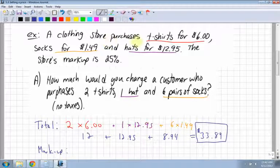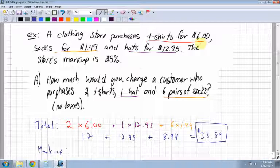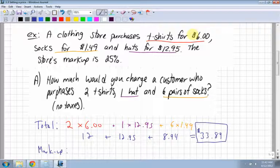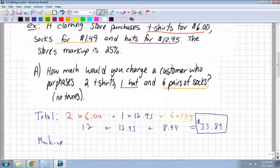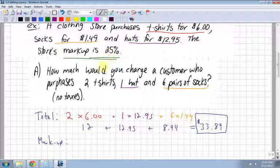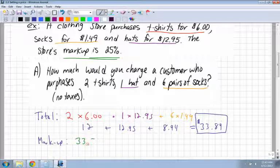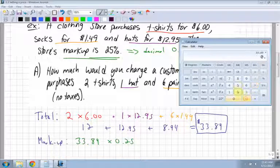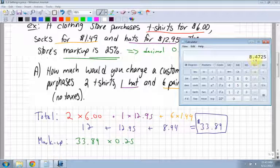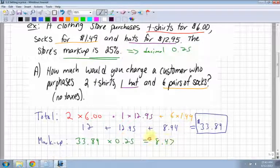This is how much a clothing store purchases the stuff for. They're not selling for this price. They're going to charge you what's called a markup. The markup was 25%. That means I have to take my $33.89 and convert 25% first to a decimal, which is 0.25. I multiply 33.89 times 0.25 to figure out what their markup is. 33.89 times 0.25 equals $8.47. That's $8.47 markup.